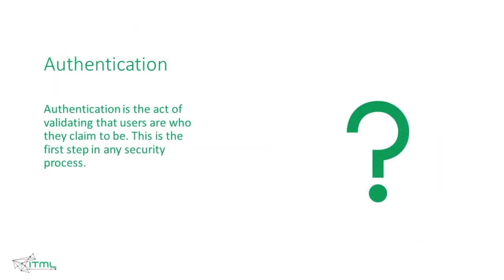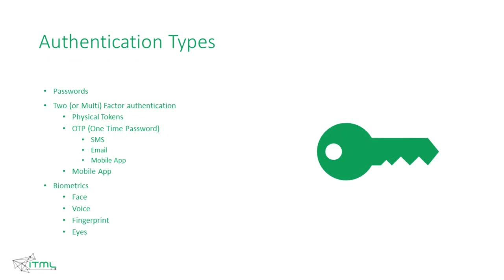Another important term in cybersecurity is authentication — the act of validating that users are who they claim to be. We are becoming more and more familiar with such processes every day. The most common authentication is the password, which is secret and only we are supposed to know. Two or multi-factor authentication is another type. Physical tokens are not so common. The one-time password is quite common, especially in internet banking. There may also be a separate mobile authenticator app. Biometrics is a very secure and common way to authenticate using your fingerprint, face, voice, or eyes.